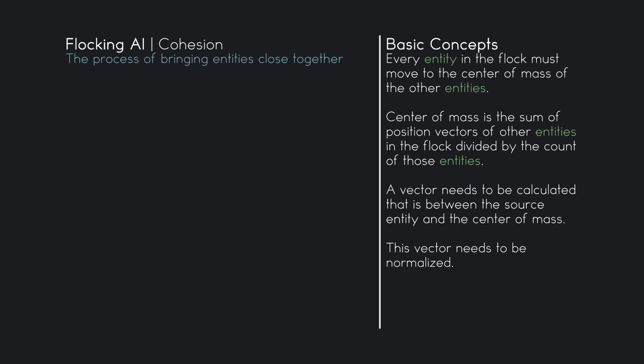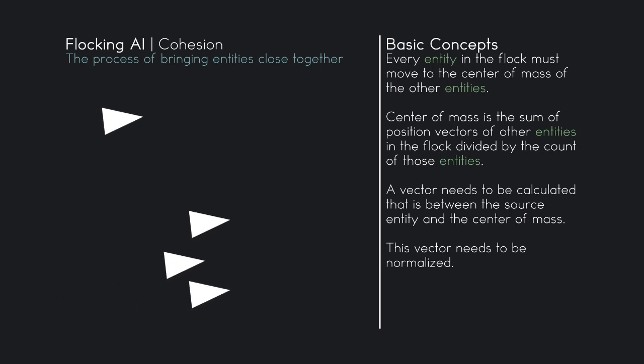Let's say a flock has four members, four entities. Three entities are nice and close together, and one entity is far away. So even though those three entities are nice and close together, they still need to participate in the cohesion algorithm. Let's take a look at one of the entities — let's say we are performing cohesion on the entity that is far away.